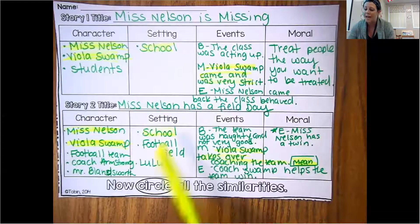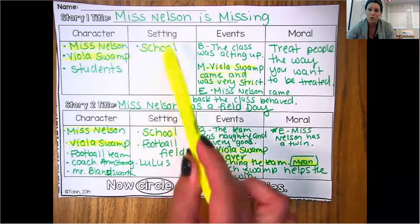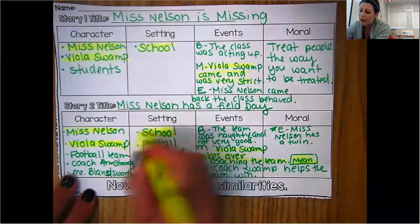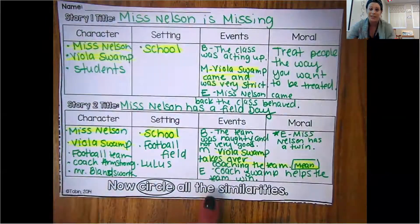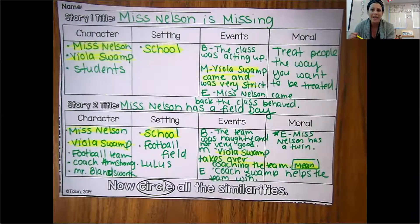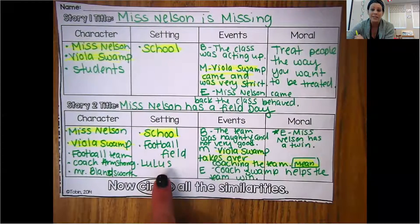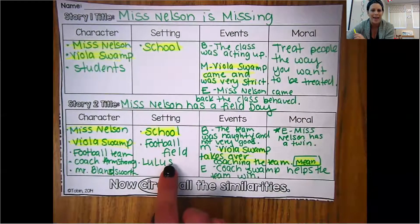And then let's talk about the setting. Both stories were at school. So make sure you highlight school because that's another similarity — that's another comparison, how they're alike. But then in Miss Nelson Has a Field Day, they also had the football field and then they have Lulu's, the cafe. So if you don't have those, why don't you just go ahead and add them now.